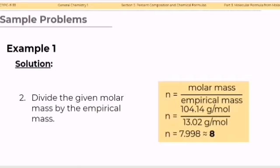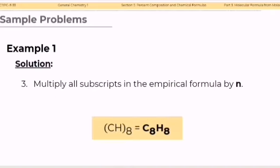Step 2: Divide the given molar mass by the empirical mass. Substituting the values, we have 104.14 grams per mole divided by 13.02 grams per mole, which is equal to 7.998, and this can be rounded off to 8. Step 3: Multiply all subscripts in the empirical formula by the value of N. Since N is equal to 8, the number of carbon and hydrogen atoms are multiplied by 8. Hence, the molecular formula is C8H8.